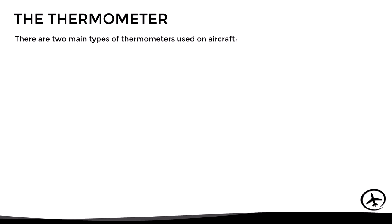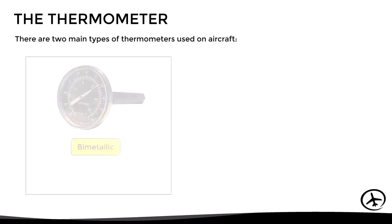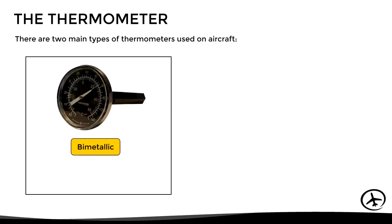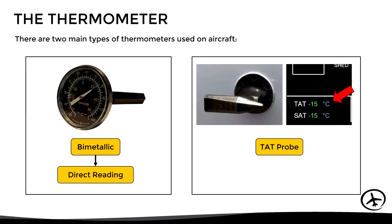There are two main types of thermometers used on aircraft. There is the bimetallic thermometer, also known as the direct reading thermometer, and the other is the total air temperature probe, also known as the remote reading thermometer.